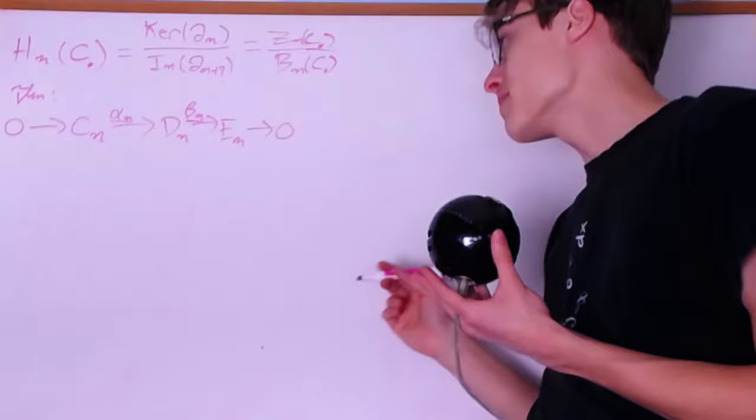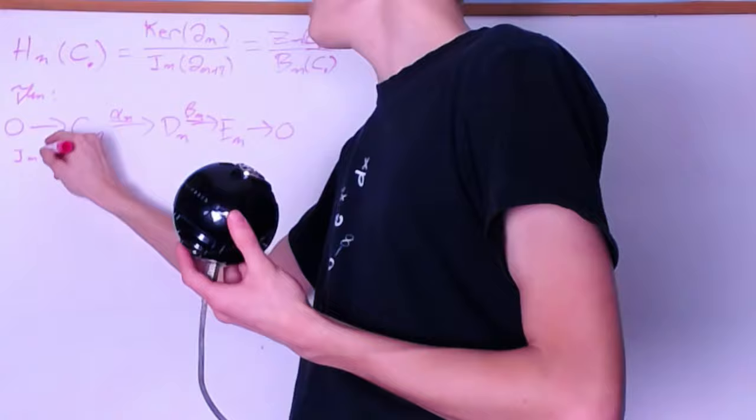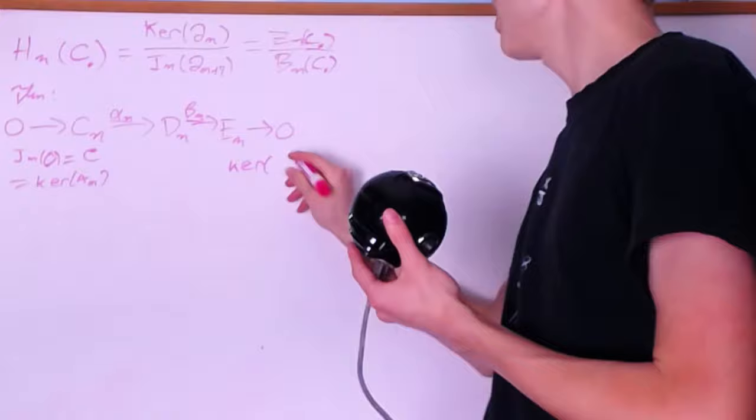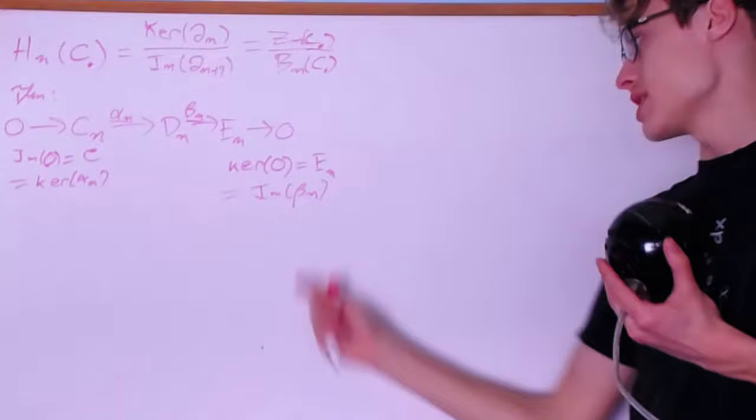To quickly verify: the image of the first map is just the identity, which must be the kernel of α_n by exactness — so the kernel of α_n is the identity, meaning α_n is injective. For surjectivity: the kernel of the final homomorphism into the trivial group is the entire space, which must be the image of β_n by exactness — so β_n is surjective.